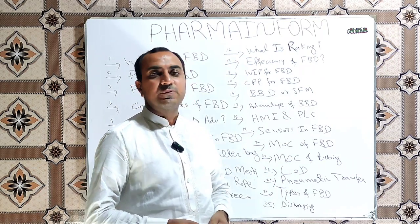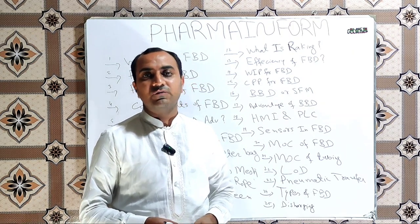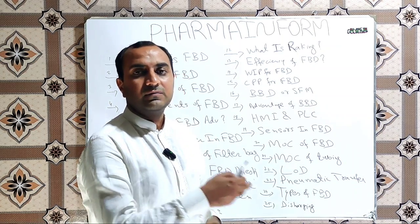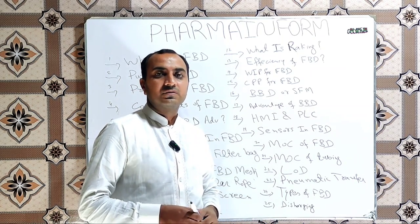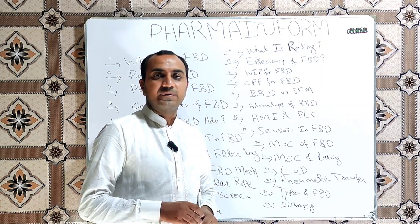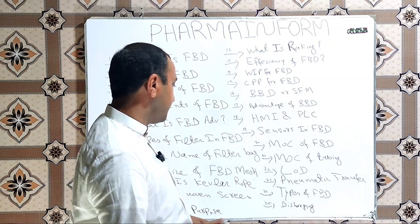What are the types of FBD? Basically there are two types of FBD. One is horizontal and one is vertical. Usually the commonly used type in pharmaceutical industries is vertical type.